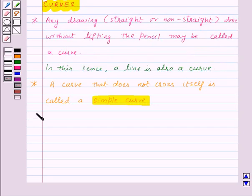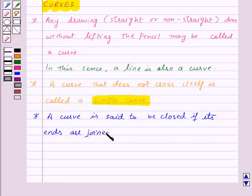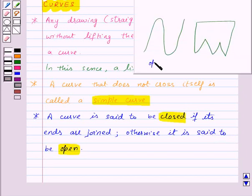Now, a curve is said to be closed if its ends are joined. Otherwise it is said to be open. Here, this is an open curve and this is a closed curve.